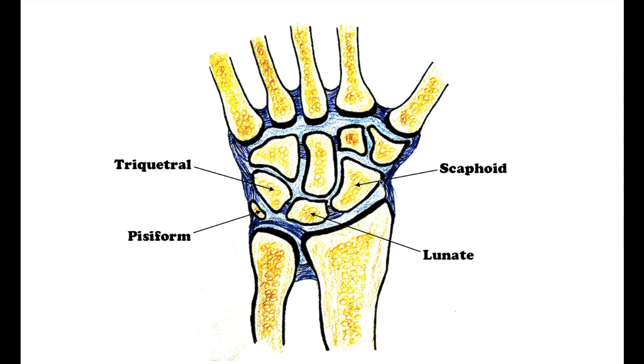In the proximal row we have the scaphoid bone, lunate bone, triquetrum bone, and pisiform bone.